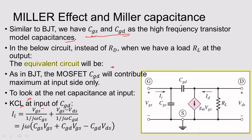When you apply KCL at the input node, you can see the currents entering and leaving the node. The current Ii equals Vgs divided by (1 / jωCgs). For Cgd, which is between input and output, the voltage across it is Vgs minus Vds, so that current is (Vgs − Vds) divided by (1 / jωCgd). Rearranging, the input KCL equation becomes: Ii = jω(Cgs·Vgs + Cgd·Vgs − Cgd·Vds).